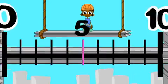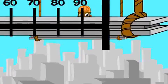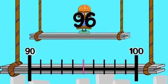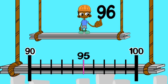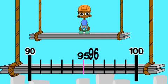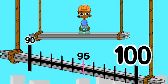Sometimes the nearest ten is 100. Look at 96. The benchmarks are 90 and 100, and the midpoint is 95. Since 96 is greater than 95, to the nearest ten, 96 rounds up to 100.